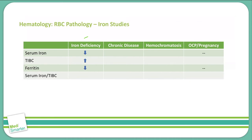Ferritin, which is the storage medium for iron in the body, will be down because there's less iron in the body. And then when you do a ratio of serum iron to total iron binding capacity, you will see that is greatly decreased because of the increase in the total iron binding capacity over the serum iron.